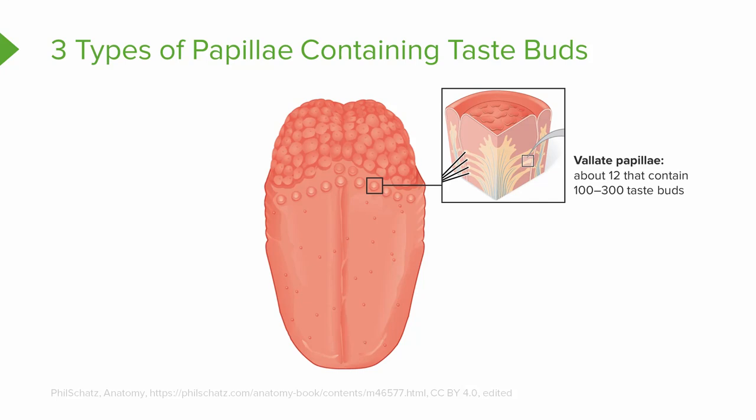Taste buds are located in elevations on the tongue called papillae. There are three types of papillae that contain taste buds in our mouth. First, we have the valate papillae, which are located on the back of the tongue. There are about 12 of these papillae, and each of them contains about 100 to 300 taste buds.